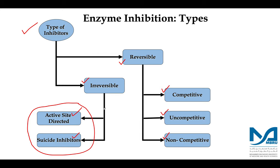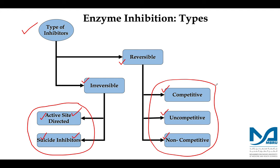We will focus on the mechanism of active site directed and suicide inhibitors, but we will not look at the kinetics of such inhibitors. However, for reversible inhibitors, we need to know a bit of kinetics where we will look at the effect of reversible inhibitors on the different kinetic parameters such as Km and Vmax. By now, I believe you should be conversant with what Km and Vmax are.